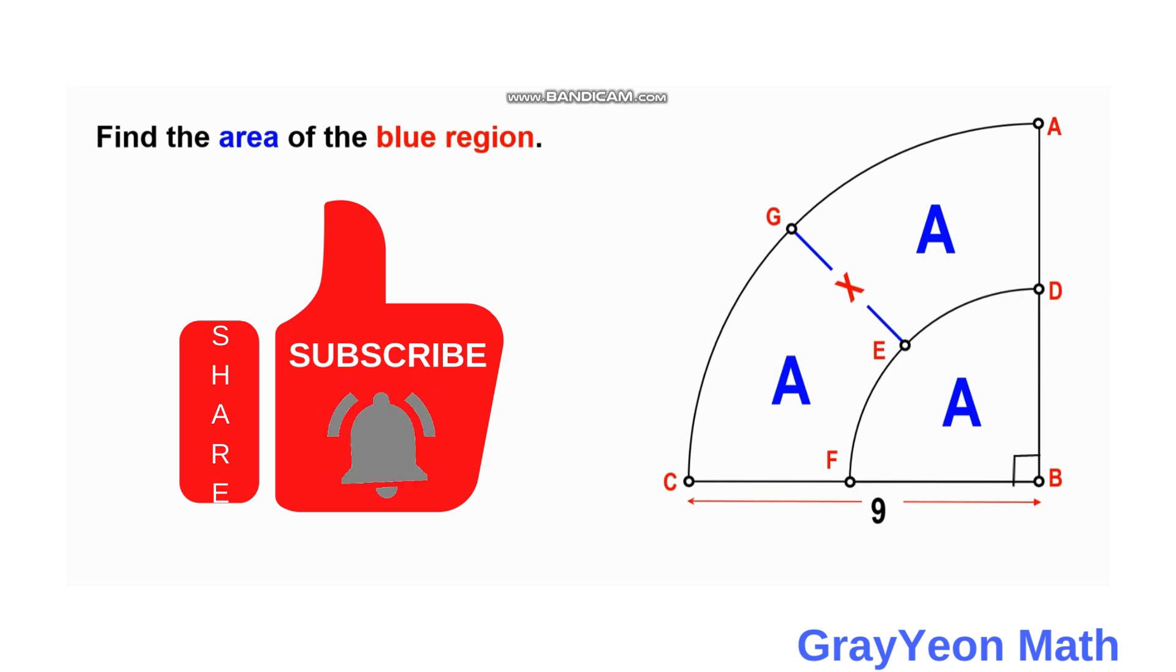Welcome to GrayonMath. We are asked to solve this problem. We have this quarter circle divided into 3 equal portions, and by this line, I mean segment GE or segment X.